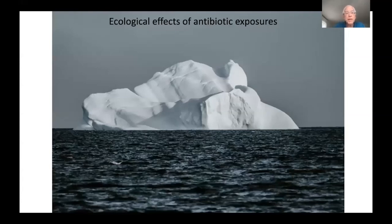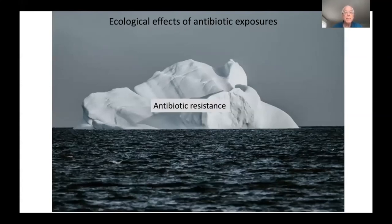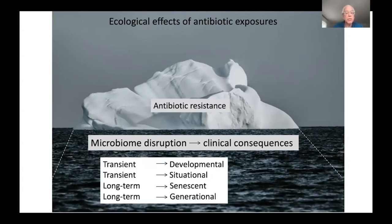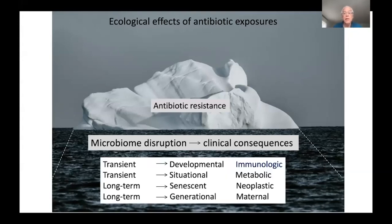We're all concerned about the ecological effects of antibiotic exposures, and I draw it like the proverbial iceberg. The tip of the iceberg is antibiotic resistance — we've known about this since Fleming talked about it in his Nobel Prize speech in 1945. But I draw the body of the iceberg as the effects of antibiotics disrupting the microbiome, which can lead to clinical consequences. The disruption can be transient or long-term; it can be developmental, situational, senescent, or generational. The effects can be immunologic, metabolic, neoplastic, or maternal.